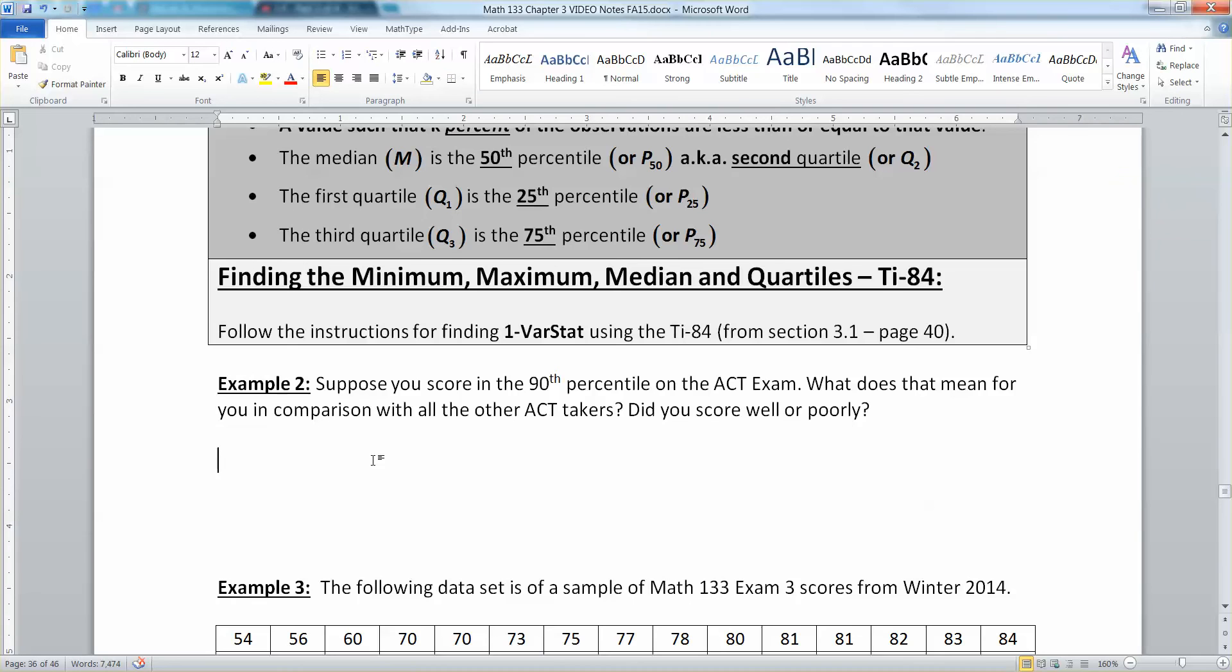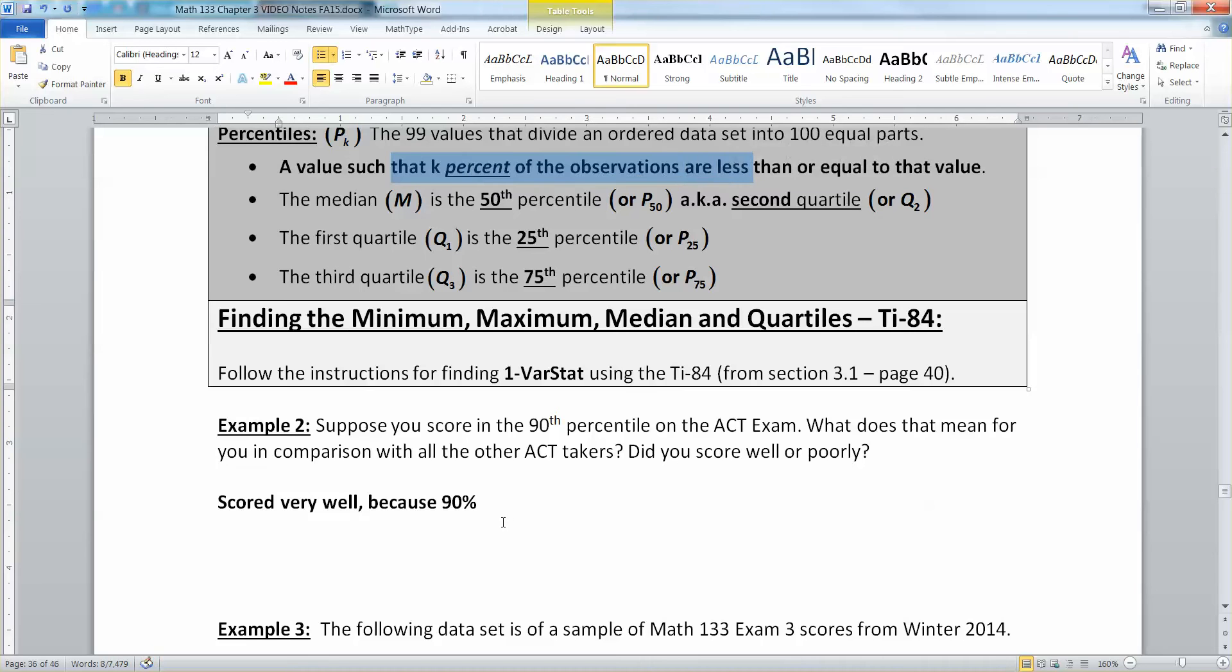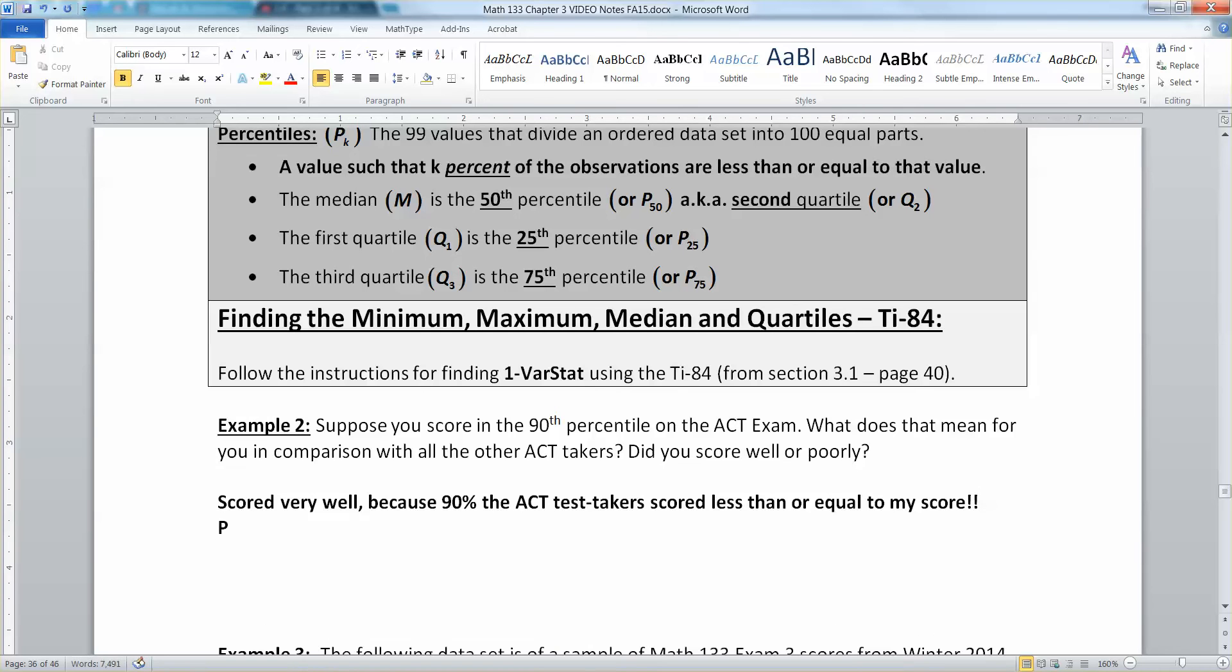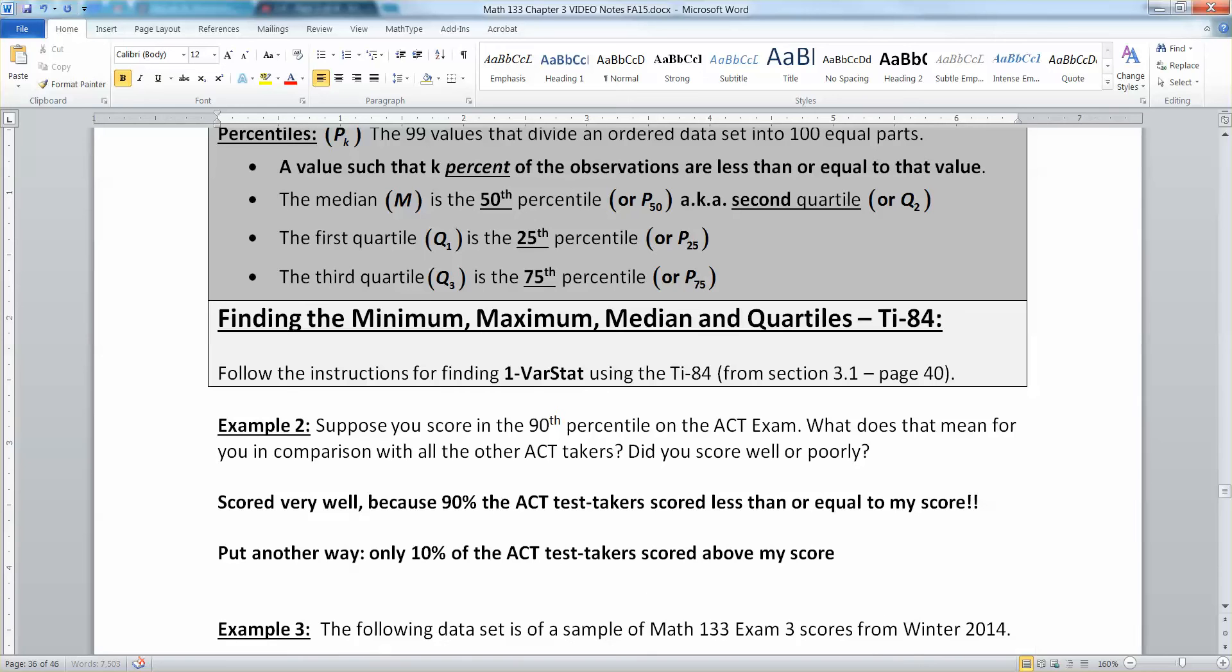Now suppose you score the 90th percentile on the ACT exam. What does that mean for you in comparison with all other ACT takers? Did you score well or poorly? Well, that means you scored very well. 90% of the observations, so 90% of the ACT test takers scored less than or equal to my score. So you did extremely well. 90% of the test takers are less than or equal to my score. Put another way, only 10% of the ACT test takers scored above my score. That's really well. That's doing very well on the ACT.